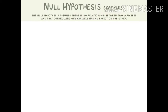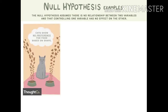So here are some examples of null hypothesis. The null hypothesis assumes there is no relationship, no effect, no difference between two variables, and that controlling one variable has no effect on the other. For example, in an experiment we have a cat and we are giving cat food with different shapes. If we state the null hypothesis: cats show no preference for food based on shape. This means that whatever shape of food you give to the cat, it will eat it. But if the null hypothesis is rejected, then we can say that cats have a preference for food based on shape.